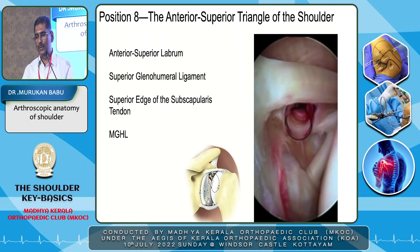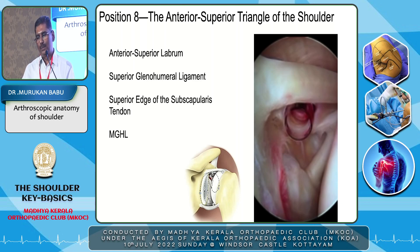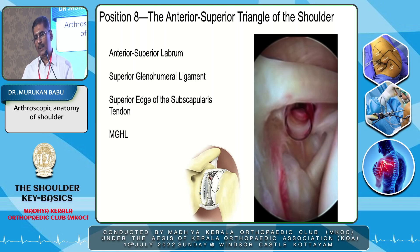Coming to the eighth position — that is an important area. Here you need to see four structures: the anterior superior labrum, the superior glenohumeral ligament, the superior edge of the subscapularis tendon, and the MGHL. The anterior superior labrum is not the superior labrum — it is the superior part of the anterior labrum. The superior labrum you have already covered along with the biceps tendon in the first position.